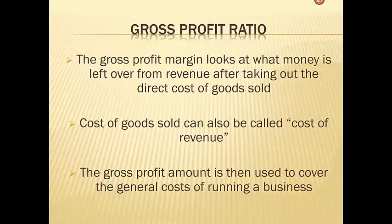Cost of goods sold can also be found as cost of revenue. So if you look at a company's income statement on Yahoo Finance, oftentimes you will not find a cost of goods sold. This is probably one of the hardest things that students of accounting find in ratio analysis, because things are not named the same across companies often. Just know that cost of revenue and cost of goods sold are synonymous and mean the same thing.